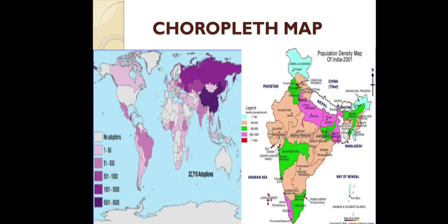Next is the choropleth map. It is also a quantitative distributional map where distribution of density is shown through various shades demonstrated as low, medium, high, etc. — like population density, sex ratio, literacy level, etc. Here in the map you can see, both in the world map and the India map, population density is shown by the choropleth map.